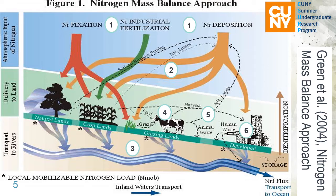Some of the nitrogen in animal waste will go to the soil and atmosphere as loss. Human waste can be identified as two types: one is the point source that goes through soil treatment and then to the ocean, and another is the non-point source that goes directly to the land.